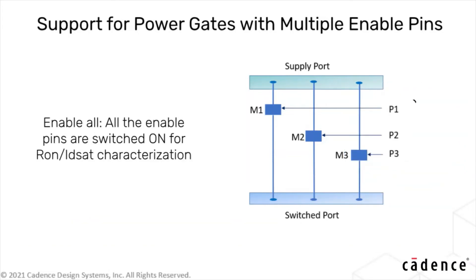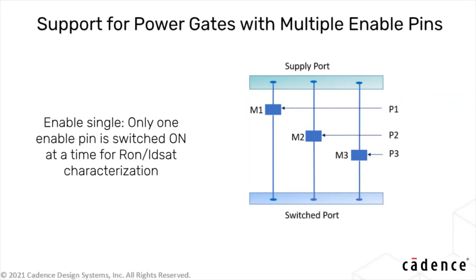Using this parameter, you can either specify enable_all to switch on all the enable pins for current characterization. Alternatively, specify enable_single to switch on only one enable pin at a time. In both cases, rail analysis will use the total effective on-resistance for the cell.